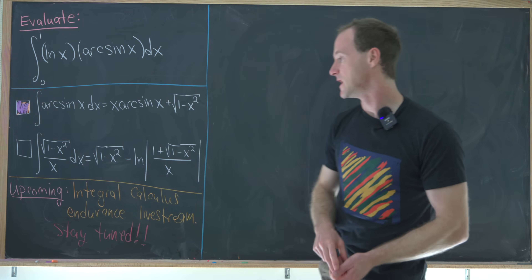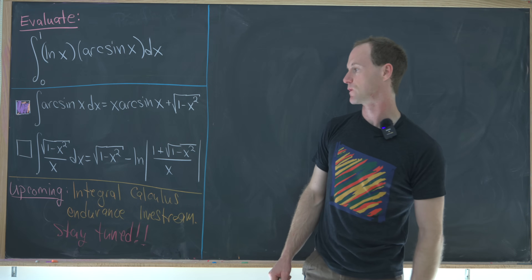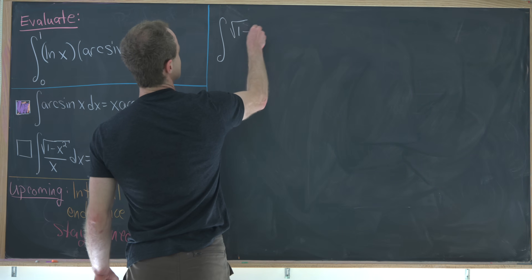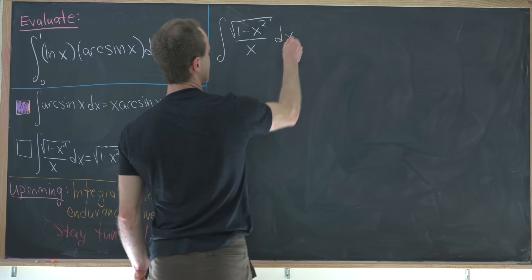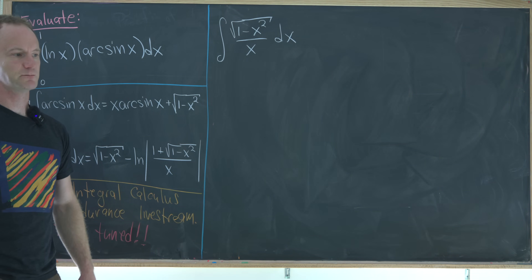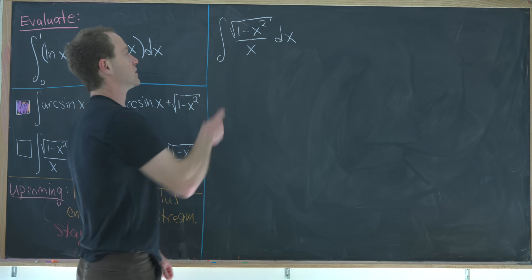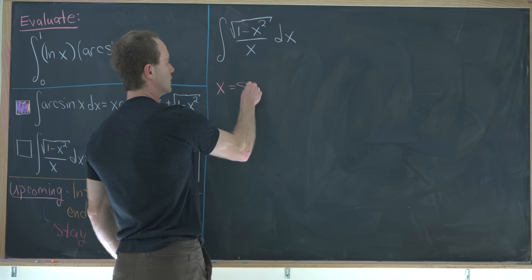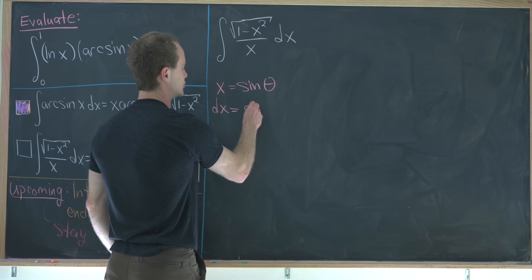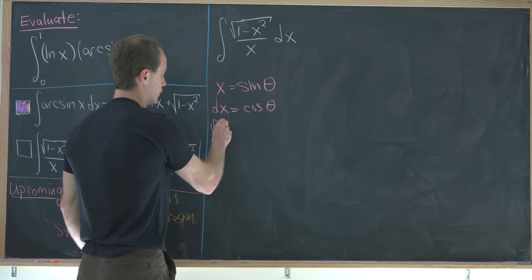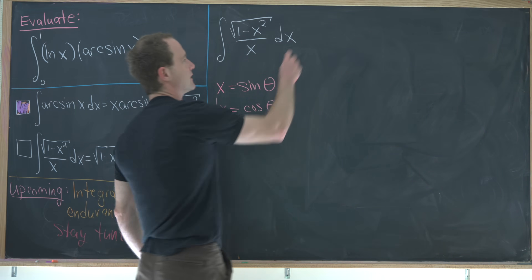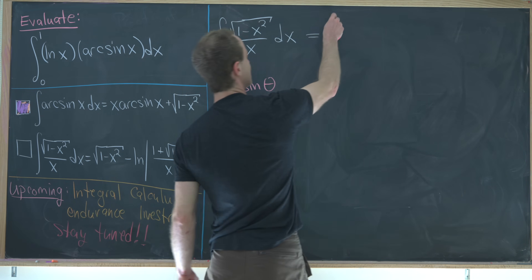Now we're ready for the second tool: the antiderivative of the square root of one minus x squared over x. There are several ways to do this; I'm going to choose trig substitution — not because it's the easiest, but so we see a variety of methods. The standard trig substitution here is to let x equal sine theta, because we have the square root of one minus x squared. That means dx equals cosine theta d theta, and the square root of one minus x squared also equals cosine theta by the Pythagorean identity.